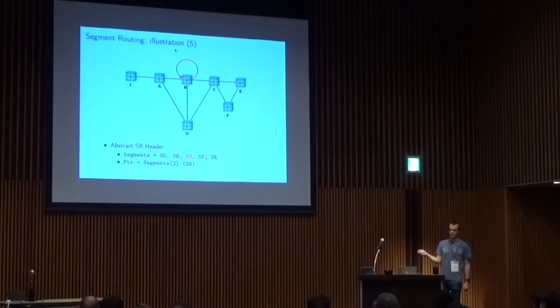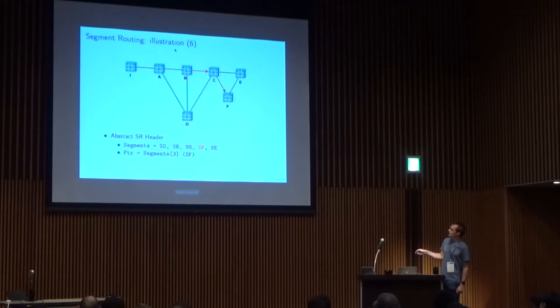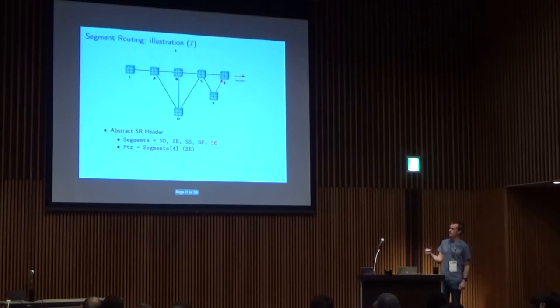After applying this special function, node B inspects the next segment and increments the pointer, forwards the packet to node F, as it is represented by segment F, again to the shortest path. Finally, node F reaches the final segment which is the egress router, which will remove the segment routing header and continue forwarding the original packet to its final destination.